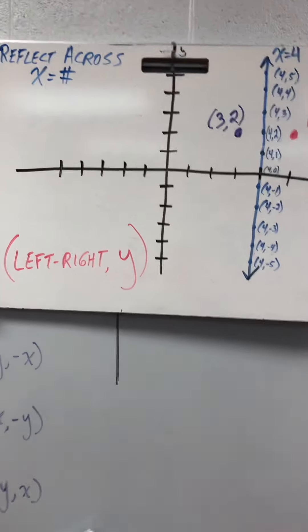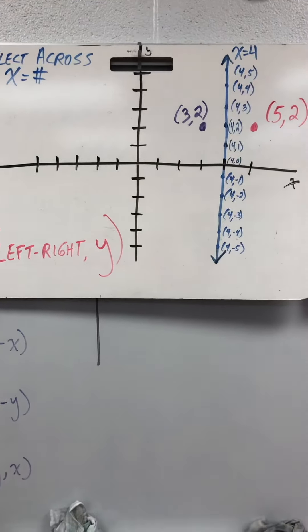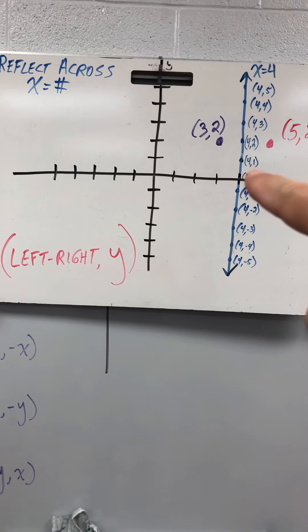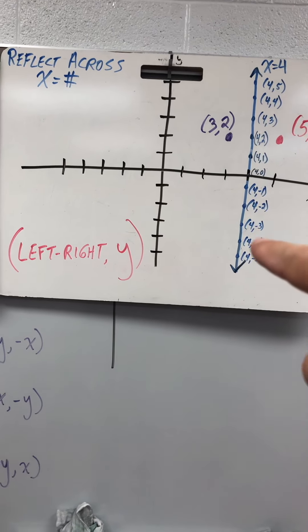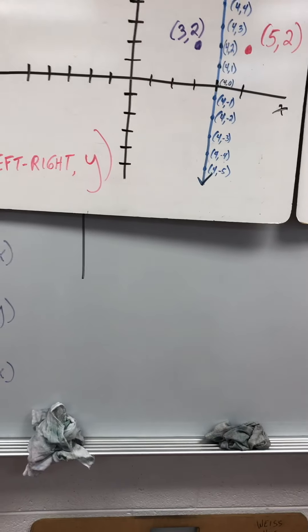To reflect across x equals any number, for example, here's x equals 4. Why is this x equals 4? Well, here's 4, 0, 4, 1, 4, 2, 4, 3, 4, negative 3, 4, negative 4, etc. No matter what y equals, x equals 4, okay?